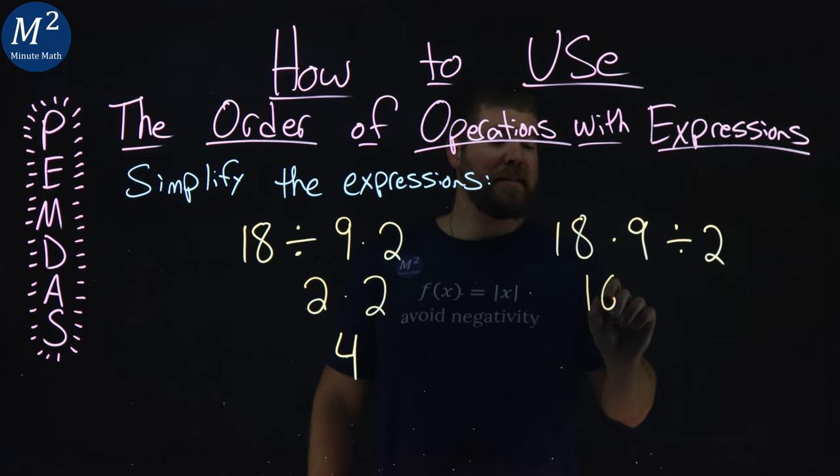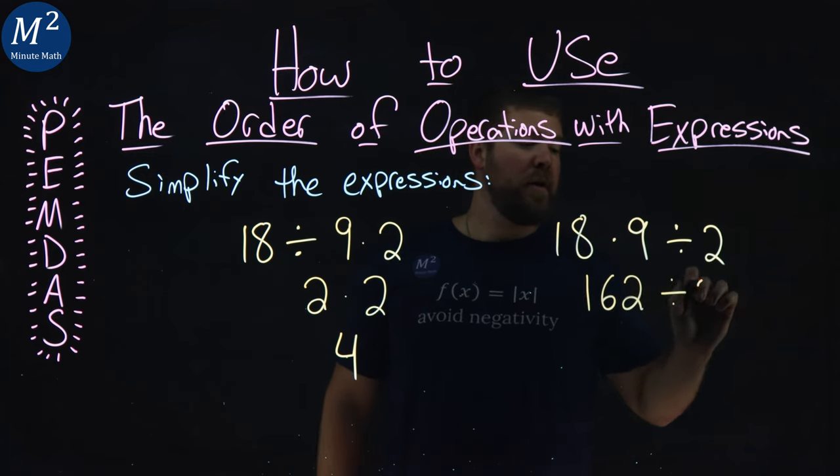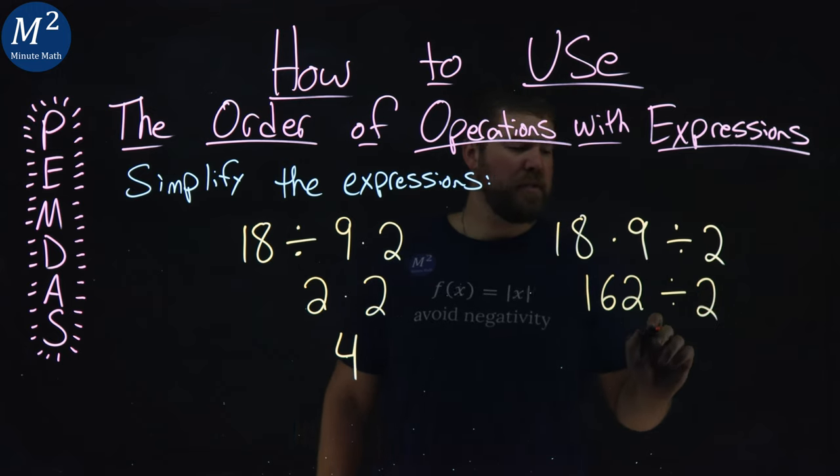18 times 9 is a 162, and then we have to divide that by 2, which is an 81.